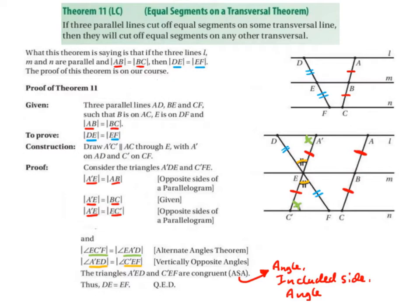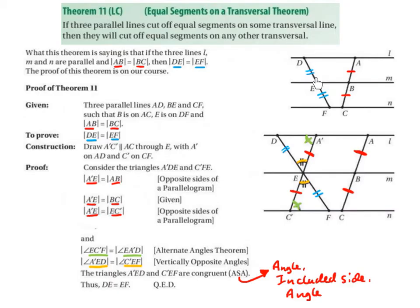The proof of this theorem is on our course. We are given three parallel lines AD, BE, and CF, such that B is on AC and E is on DF, and the distance from A to B equals the distance from B to C. What we want to prove is that the distance from D to E equals the distance from E to F.